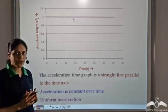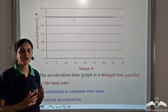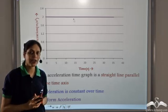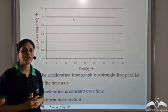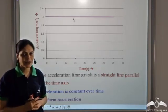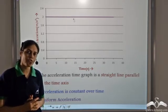So we can infer that if the acceleration-time graph is a straight line parallel to the time axis, then acceleration is constant over time. That is, it represents a uniform acceleration.